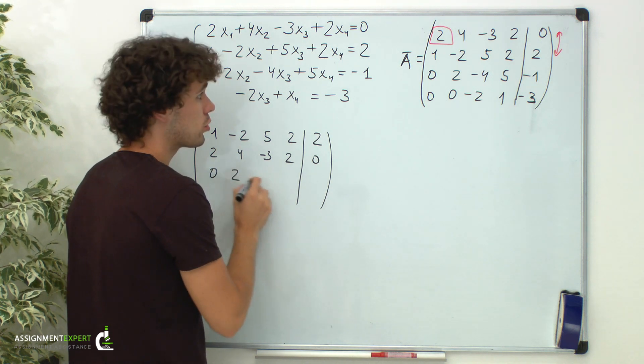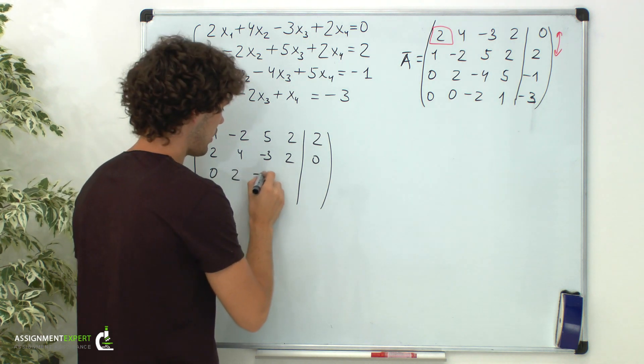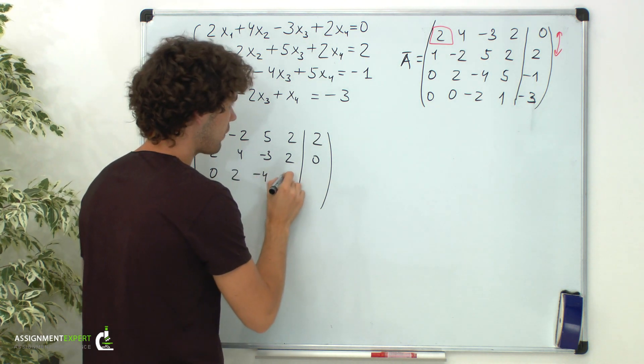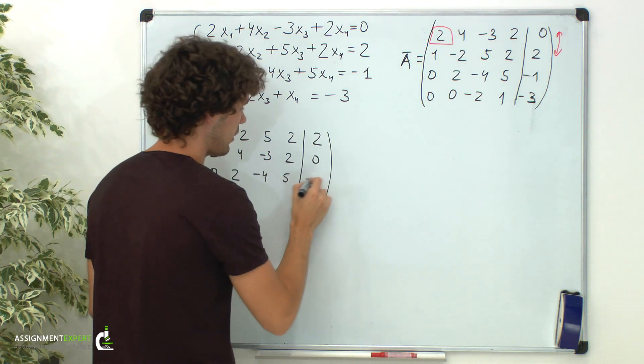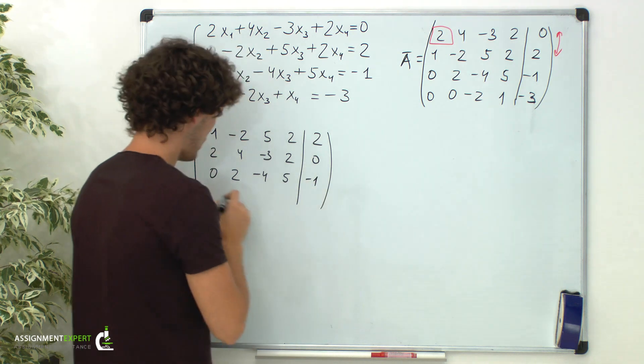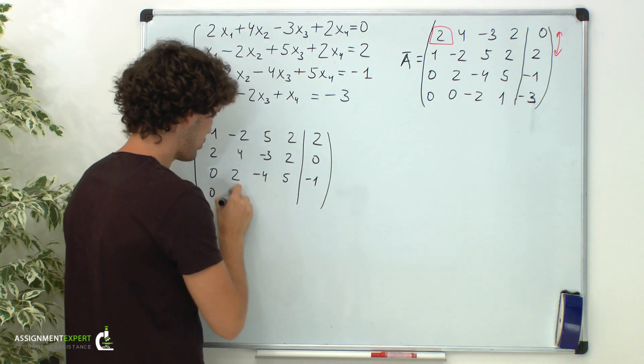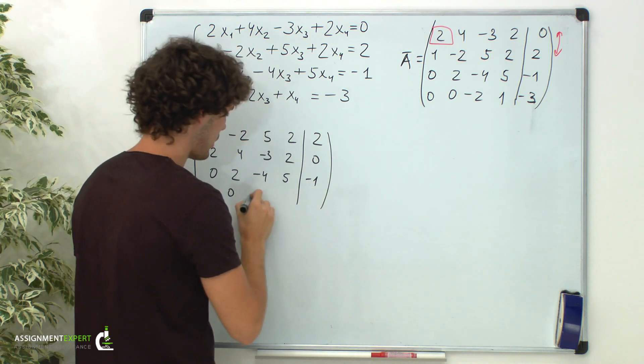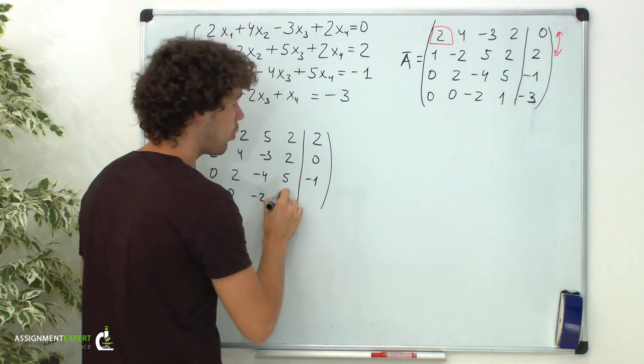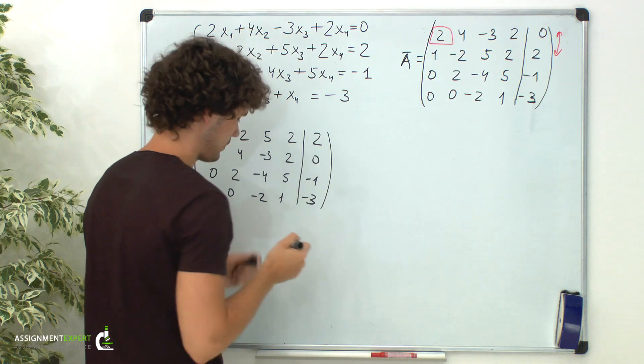The last two rows remain the same: 0, 2, negative 4, 5, negative 1; and 0, 0, negative 2, 1, negative 3.